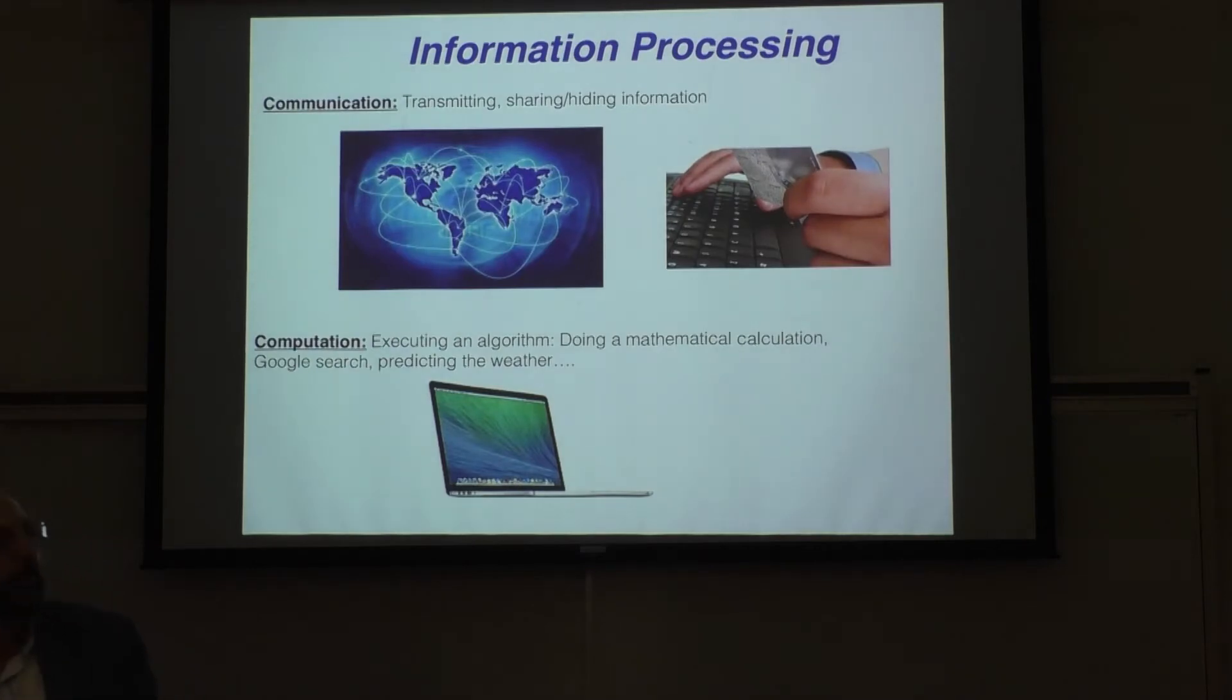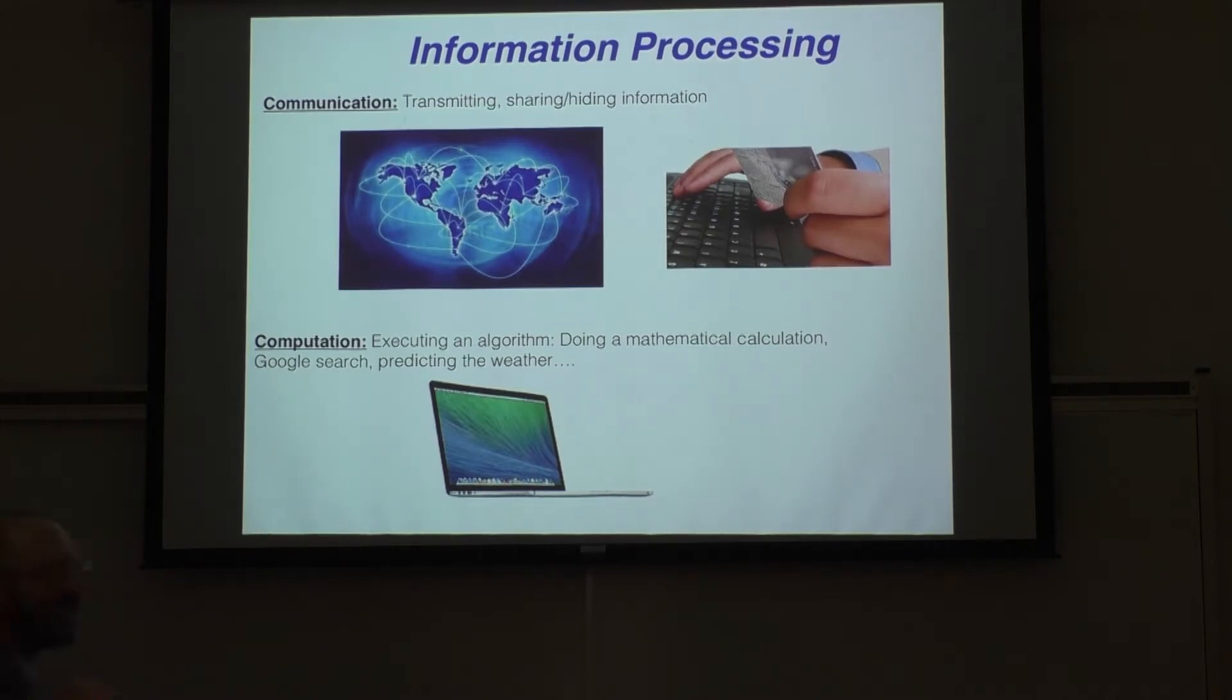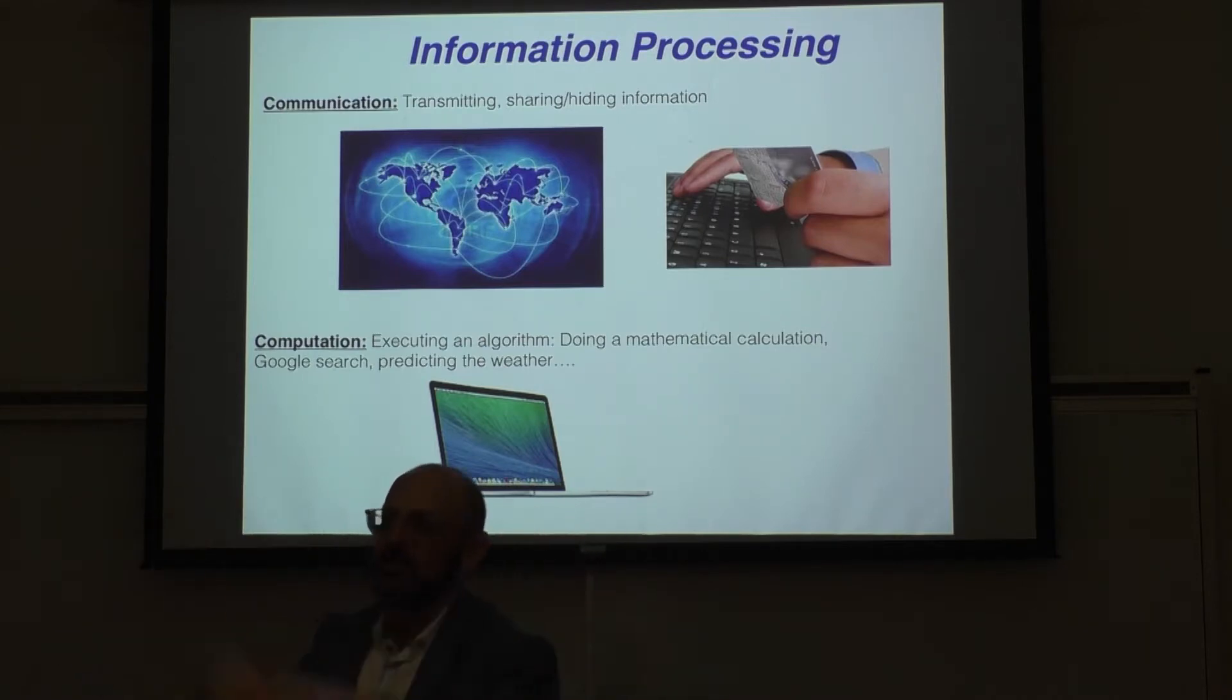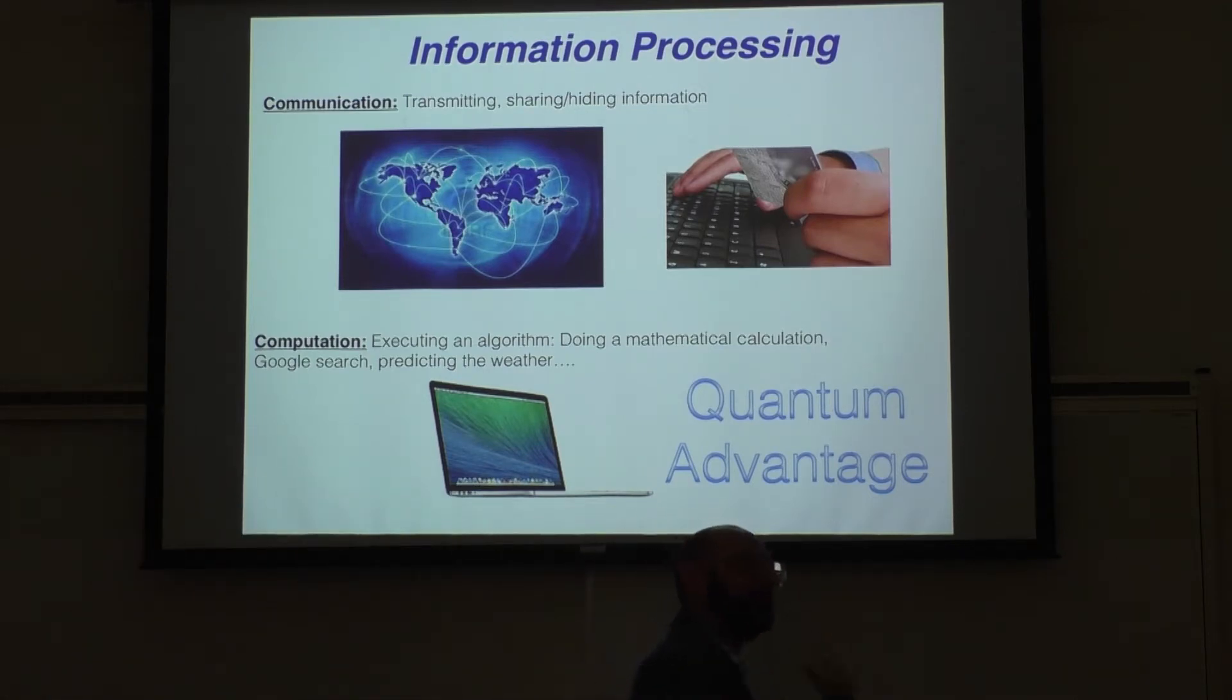Now, for fun and profit, what we want to do with information is process it. There's all kinds of ways in which we might want to communicate to one another, share or hide that information, or we might want to do a computation like simulate the climate. The deal of quantum information science is to see can we make use of the new kind of logic, the logic that defies classical logic, to get some advantage to do these tasks of communication and computation in ways that are more powerful than we could do if our machines obey the laws of classical logic.